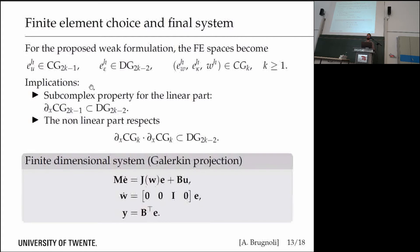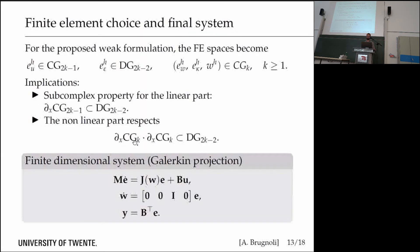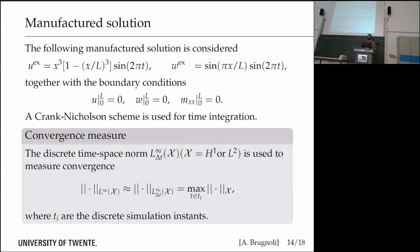For the remaining part and the nonlinear part, I would like to have something similar for the nonlinearity. Once I take the derivative of the continuous Galerkin and multiply with the derivative of another continuous Galerkin, I will be in a subspace of continuous Galerkin of order 2k minus 2 because I take the derivative twice for the quadratic term. In the end, I find this final dimensional system which retains the same structure of the infinite dimensional counterpart.